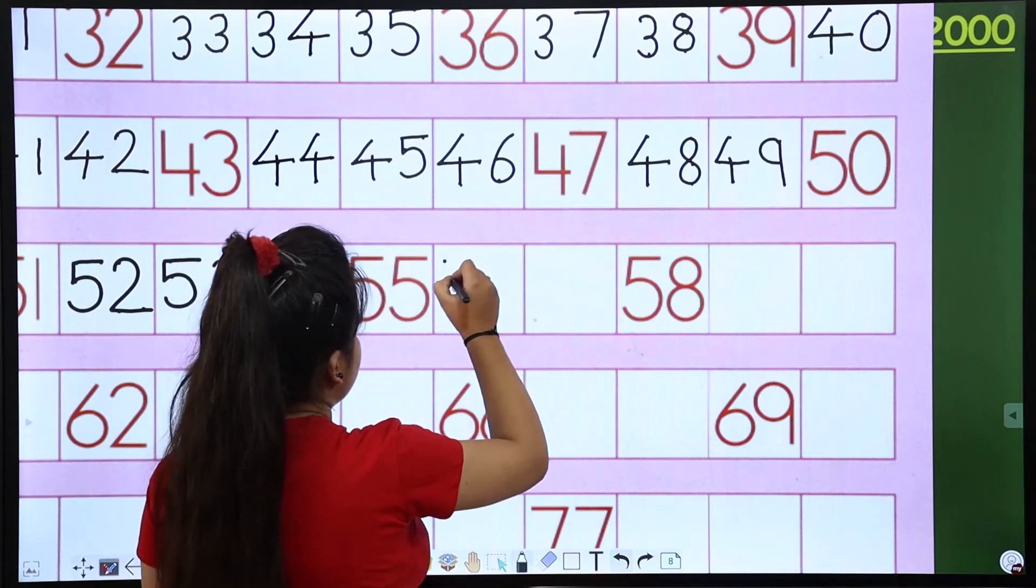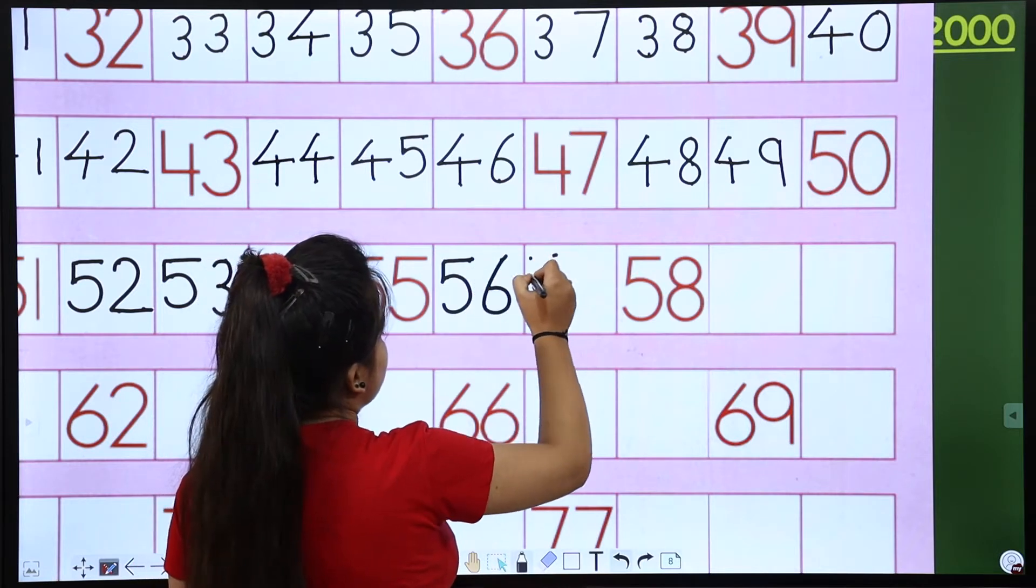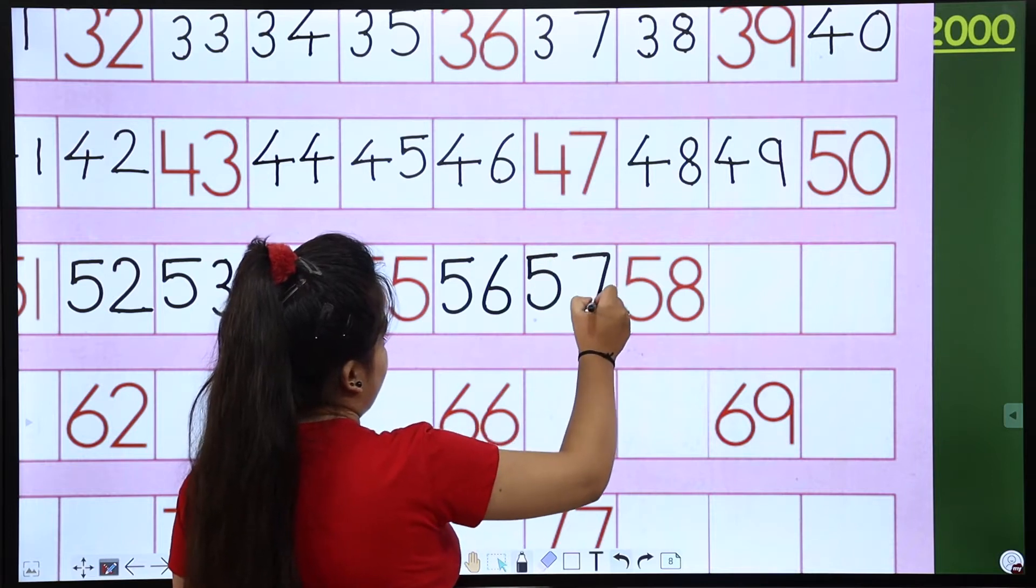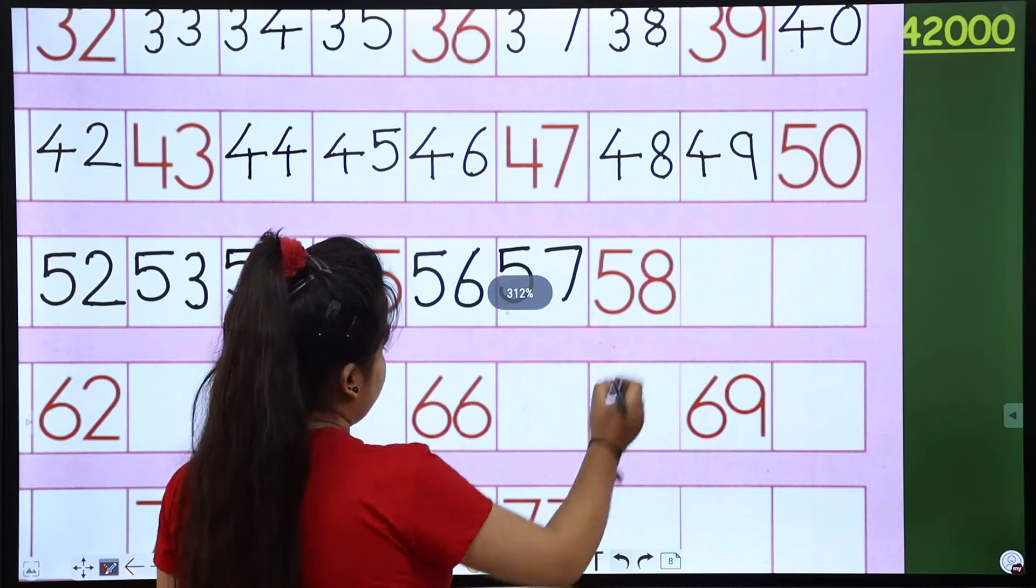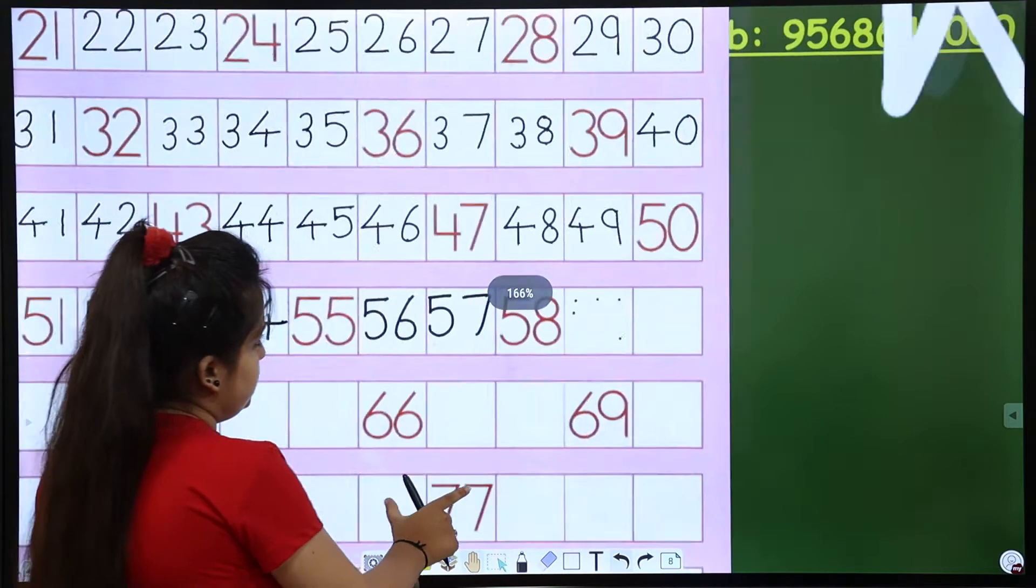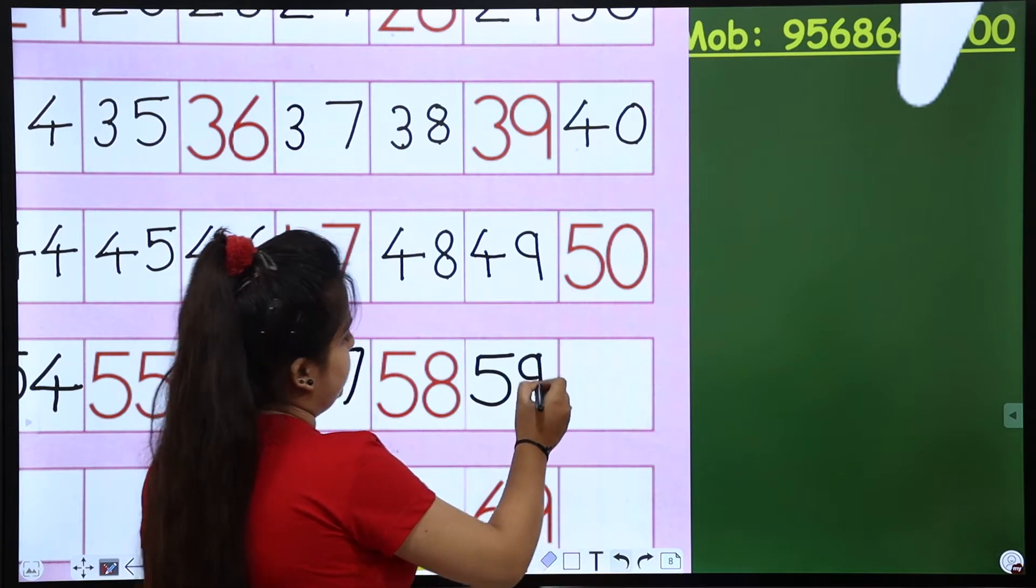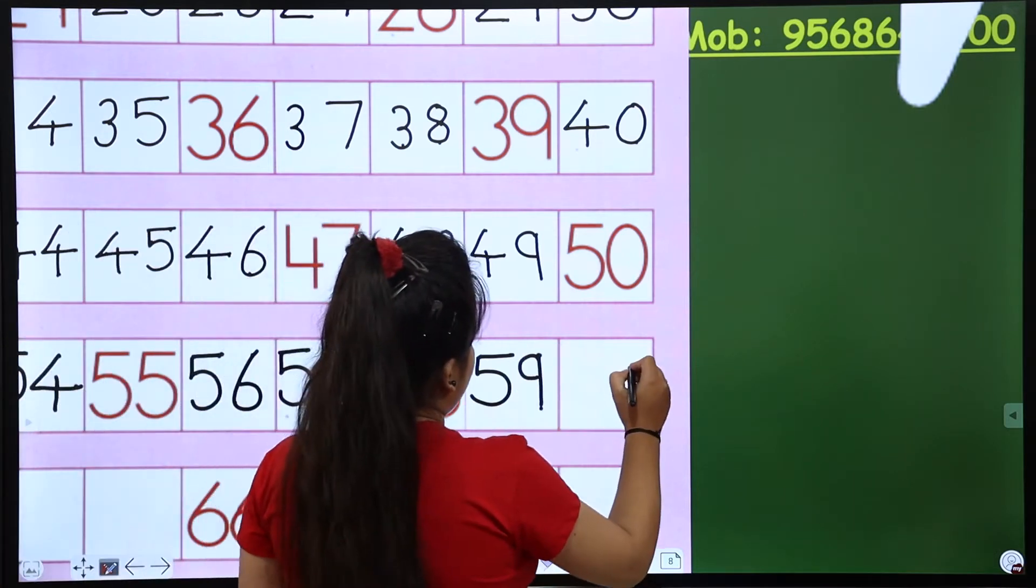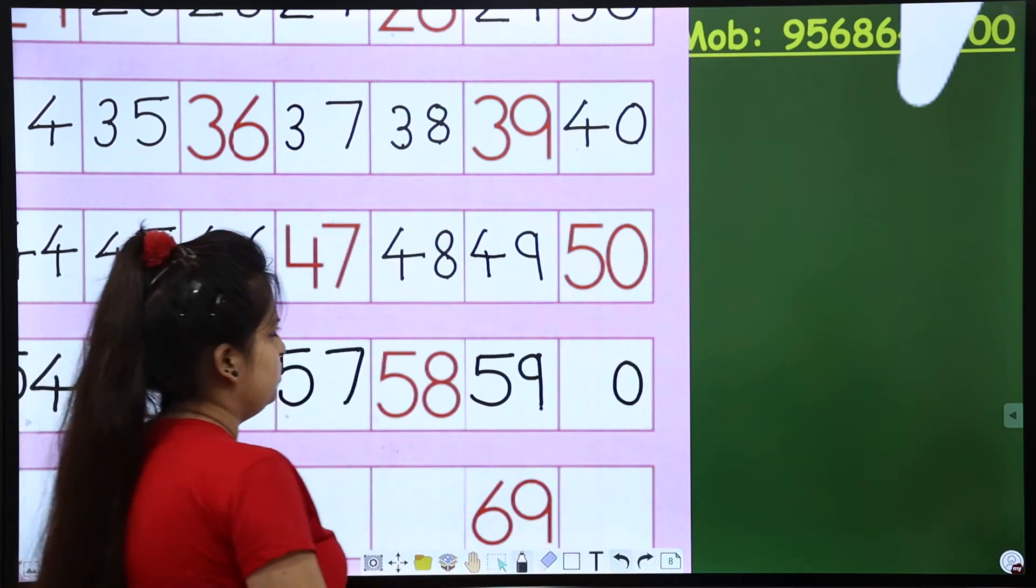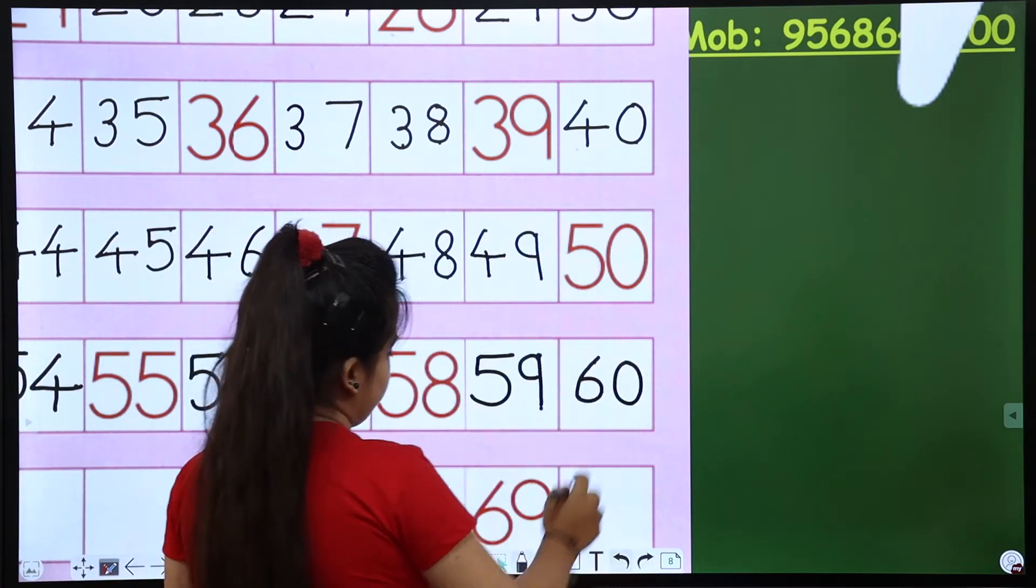Then 5-6, 56. 5-7, 57. 5-8, 58. 5-9, 59. Okay. So now comes. Now I'll tell you which number will come. After 9-0. Okay. I'm writing 0. What will come after 5? 6. So here I'll tell you, 6-0, 60. Fine.